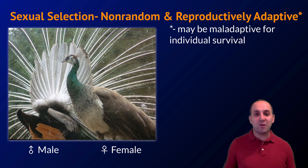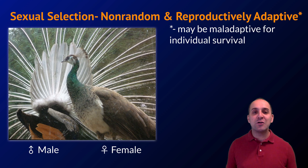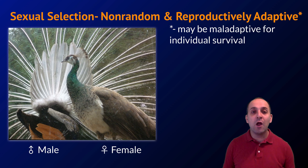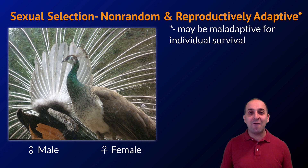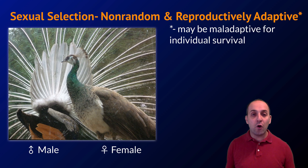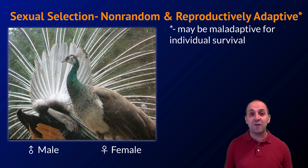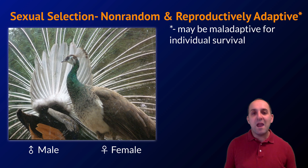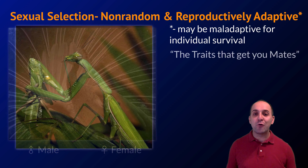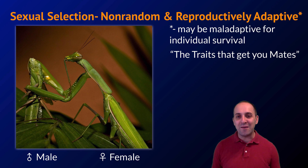You can think about sexual selection as driving the evolution of advertisements of fitness. It's a way of indicating to members of the opposite sex that even though you have this big elaborate structure, you still are able to survive — demonstrating that your genes are well adapted for your environment. In other words, sexual selection is favoring the traits that get you mates.